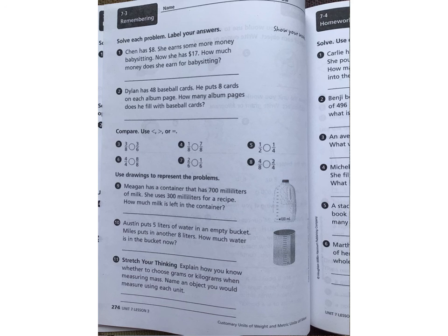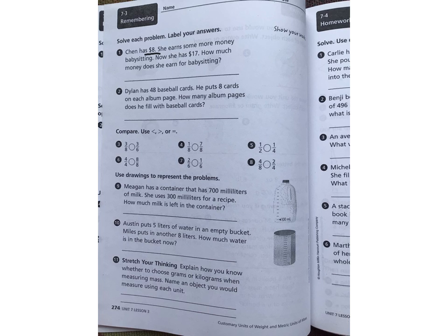Let's look at number 1. Chen has $8. She earns some more money babysitting. Now she has 17. How much did she earn? So I need to look at, she's got 17 right now. She started with 8. So I need to figure out the difference. So when I figure out the difference, I need to subtract. So you can write your equation on the line. $17, take away $8 to equal what she earned for babysitting. And remember on that one that the dollar sign is your label.